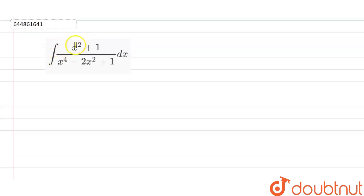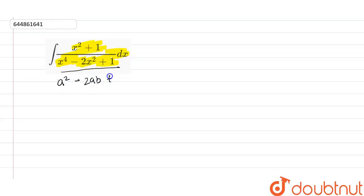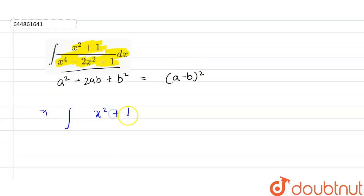Hello guys, we have the integration of (x² + 1) / (x⁴ - 2x² + 1) dx. We can see that the denominator is the same as a² - 2ab + b², which equals (a - b)². Applying this, the question can be written as integration of (x² + 1) / (x² - 1)² dx.